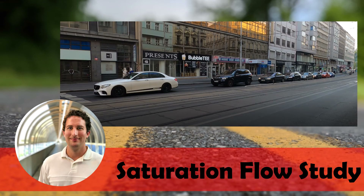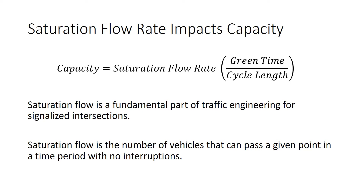The saturation flow rate is a common input for a variety of traffic engineering analyses for signalized intersections. Saturation flow rate impacts capacity. There are two key things at a signalized intersection: the saturation flow rate — the number of vehicles that can pass through a given point on a roadway in a time period with no interruptions — and the proportion of green time in the cycle length given to a particular movement. Saturation flow is fundamental for traffic engineering related to signalized intersections.